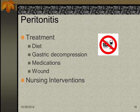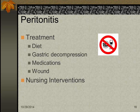Nursing interventions for peritonitis: routine post-op care including coughing and deep breathing, turning and ambulating, and leg exercises. Watch for signs of dehydration and electrolyte imbalance; maintain IV fluids and manage gastric decompression with proper NG tube and suction setup. We know the patient has recovered when WBCs return to normal — five to ten thousand, which you need to know like your own name.